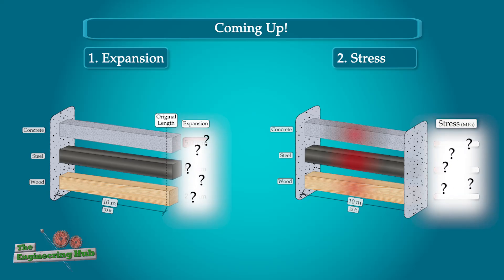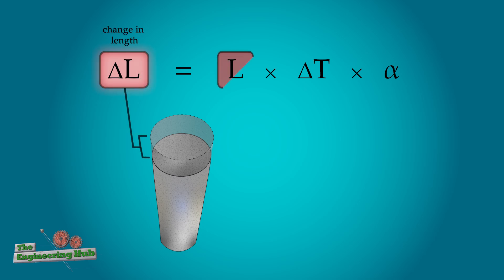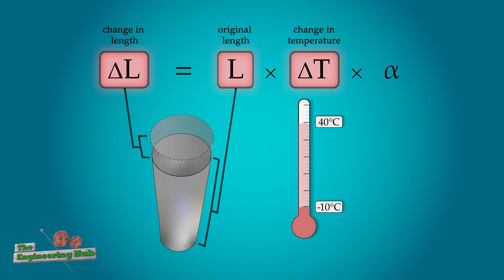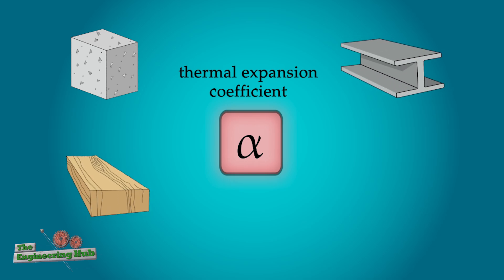In order to run this analysis we need a couple simple equations from beam theory. The first shows us how temperature change affects length. The change in length is simply the original length times temperature change times a factor called the thermal expansion coefficient, which is different for every material. This number is usually around 1 to 50 out of 1 million.